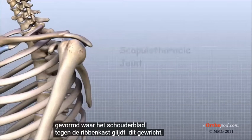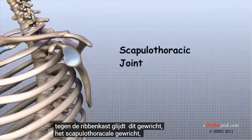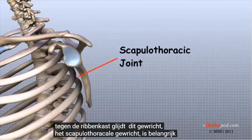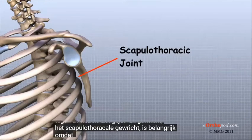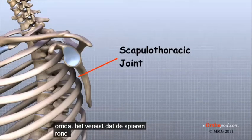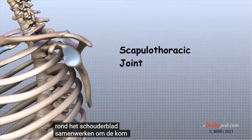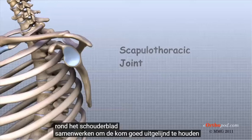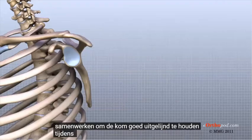This joint, called the scapulothoracic joint, is important because it requires that the muscles surrounding the shoulder blade work together to keep the socket properly aligned during shoulder movement.